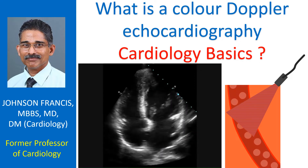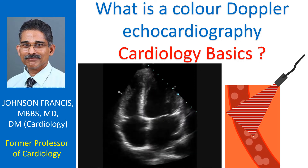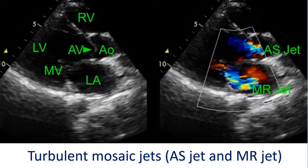In Doppler echocardiography, the target is moving red blood cells. Color Doppler echocardiography receives the ultrasound signals reflected from moving red blood cells in the heart. Ultrasound signals are emitted and received by the ultrasound probe used for echocardiography. By notation, flow of blood away from the probe is depicted as blue and flow towards the probe is depicted as red.